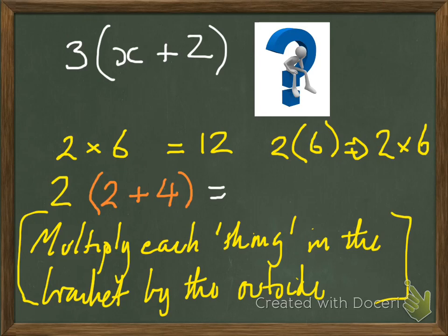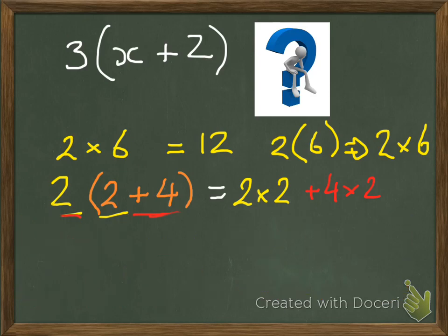So 2, that's my first thing in the bracket. It could be x, it could be t, it could be 15. But my first one is 2. Multiply each thing in the bracket by that. OK, multiply 2 by the outside, which is 2 as well. So that's 2 times 2. OK. So I've done the 2. So let's now do the 4. Multiply 4, but hey, it's plus 4. Multiply plus 4 by the thing on the outside, that's 2. So it's plus 4 times 2.